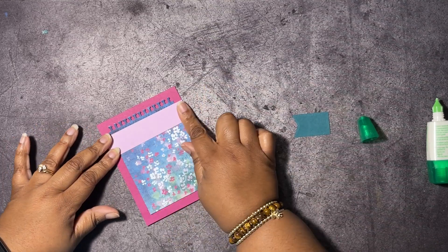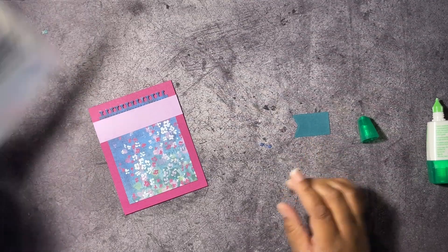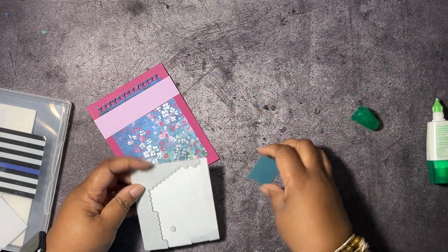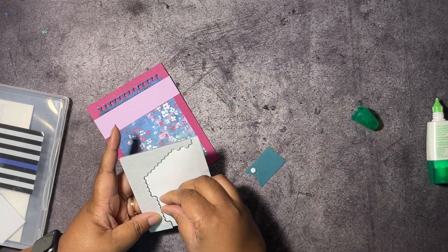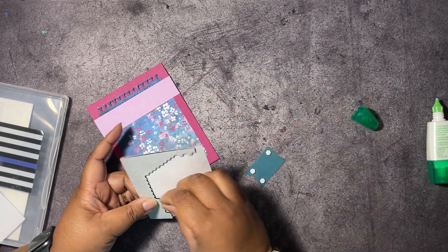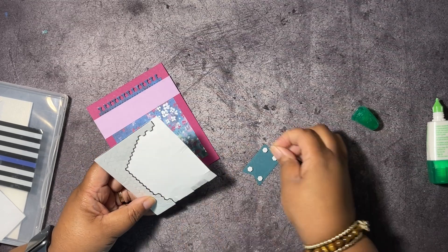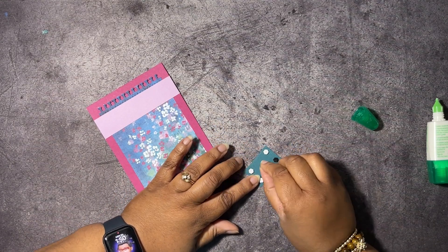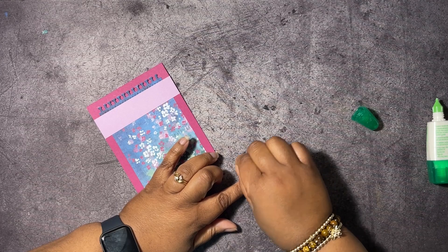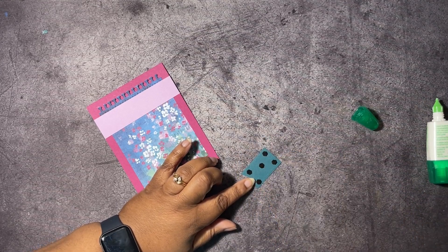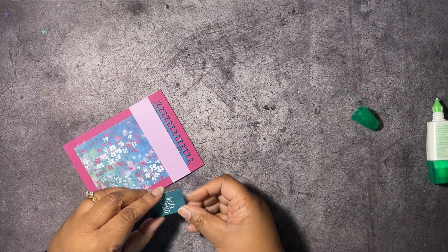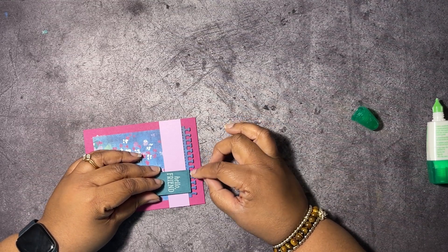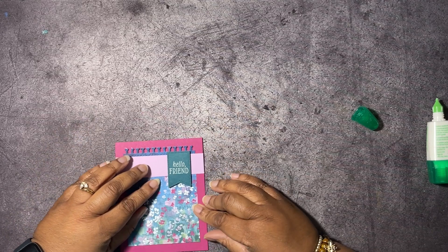Then we're going to get some stamping dimensionals. Let's get some black ones and put it on our sentiment here. Pop this up on our card. Then we can go back and do the inside. And then after the inside we can add our bling. I want to put this about right here, try to get it straight, just like that.